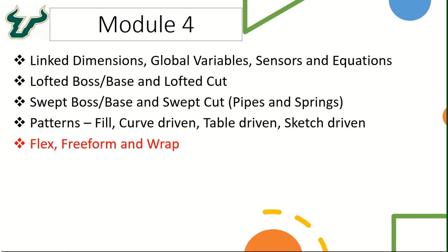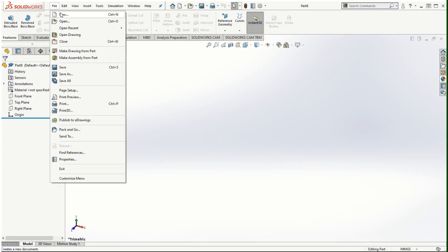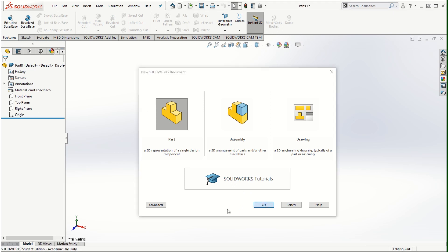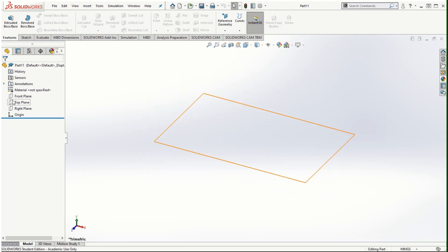Hello and welcome to this part of module 4 for the SOLIDWORKS advanced features. We are looking at flex, freeform, and wrap features in this part. These are some of the uncommonly used SOLIDWORKS features, but nevertheless it's always fun to learn new types of features that can modify the solid model.